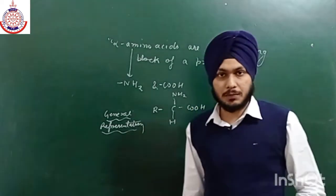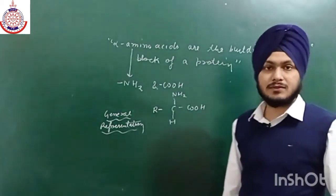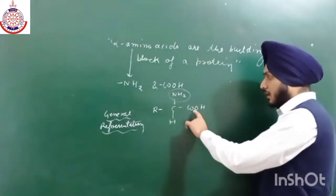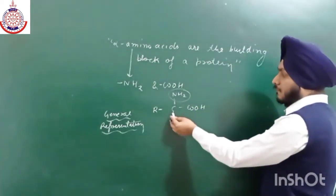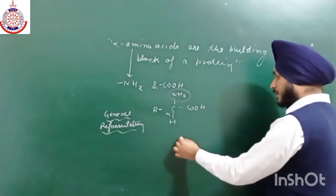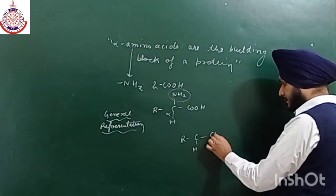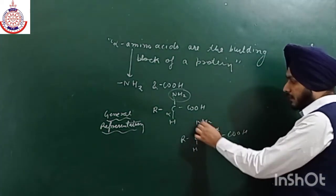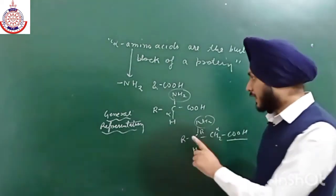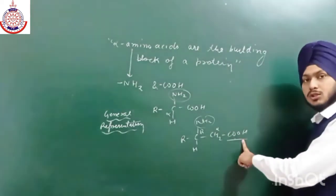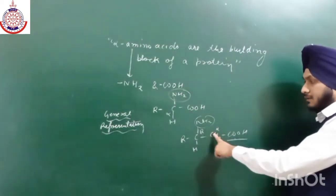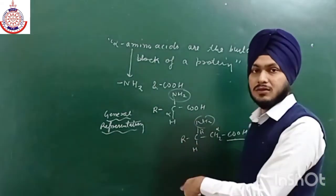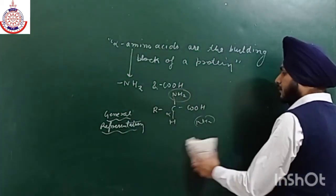Why is it called alpha and not beta? It depends upon the position of the NH2 group with respect to COOH. In alpha amino acids, NH2 and COOH are attached to the same carbon atom — this is the alpha carbon. If they are separated by one carbon, it is called beta. So the naming is based on the position of NH2 with respect to COOH: if on alpha carbon it is alpha amino acid, if on beta carbon it is beta amino acid, and so on. In proteins, alpha amino acids are present.